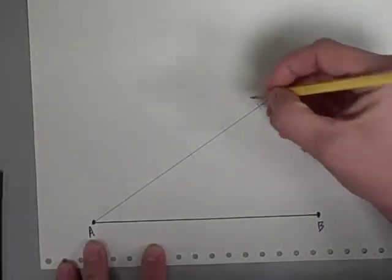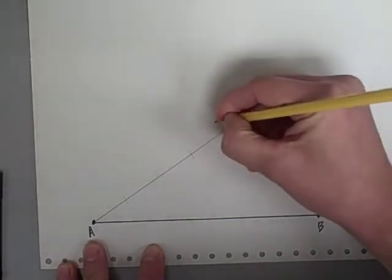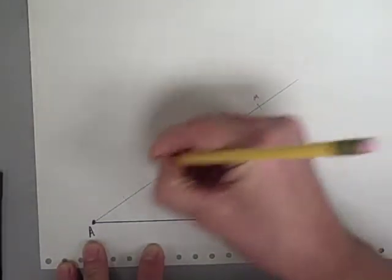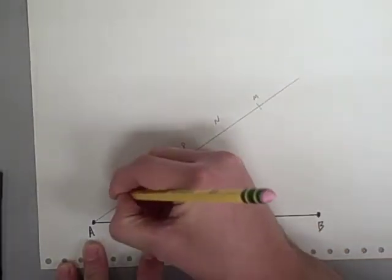So I'll just label those points. Let's call them M, N, P, Q, and R.